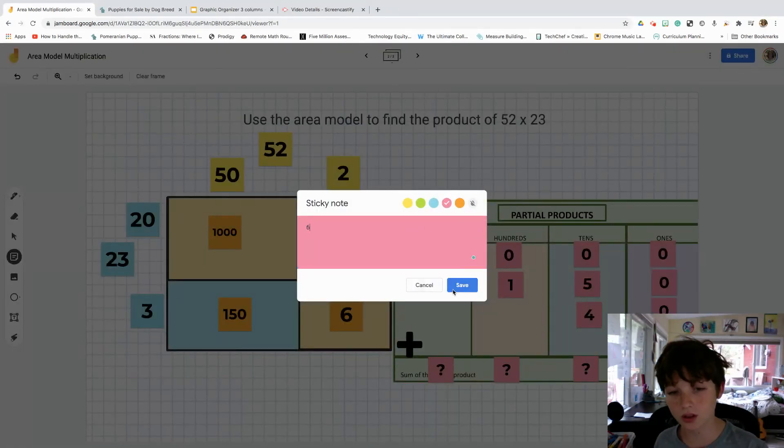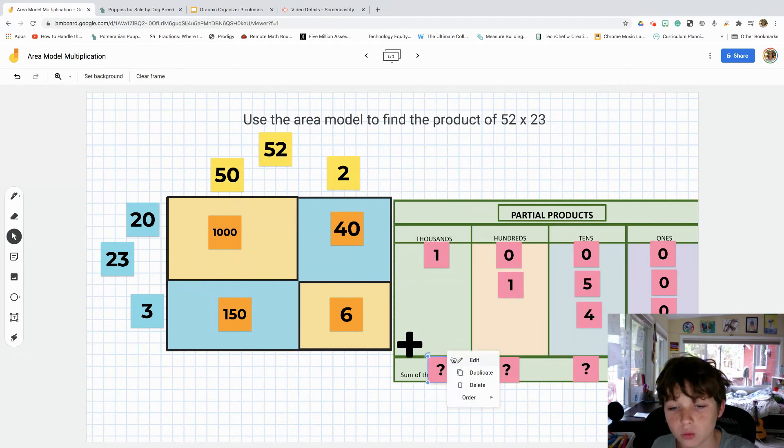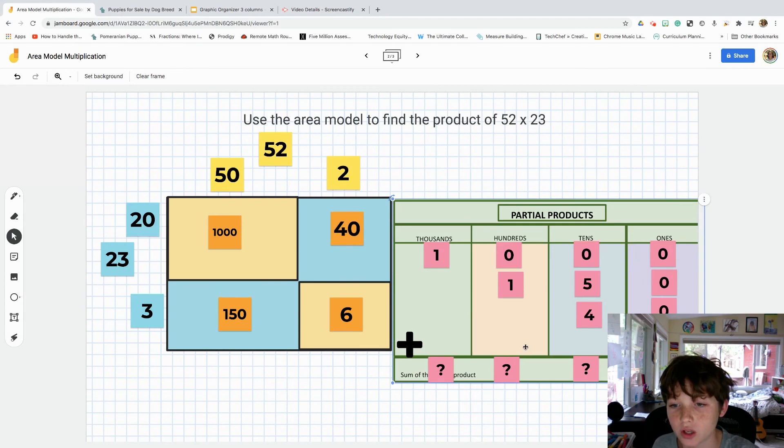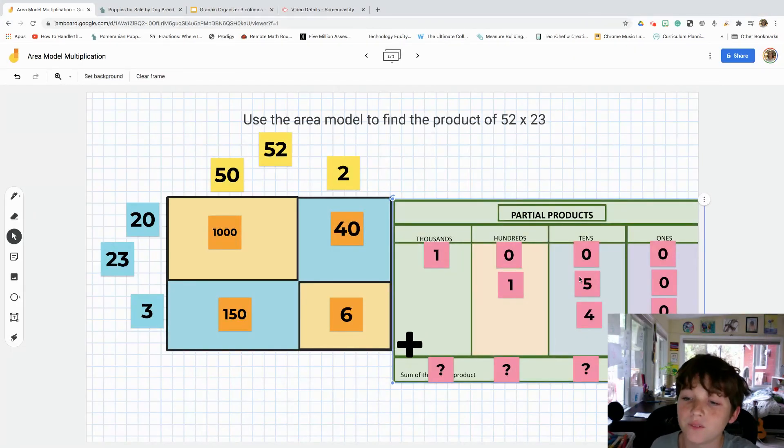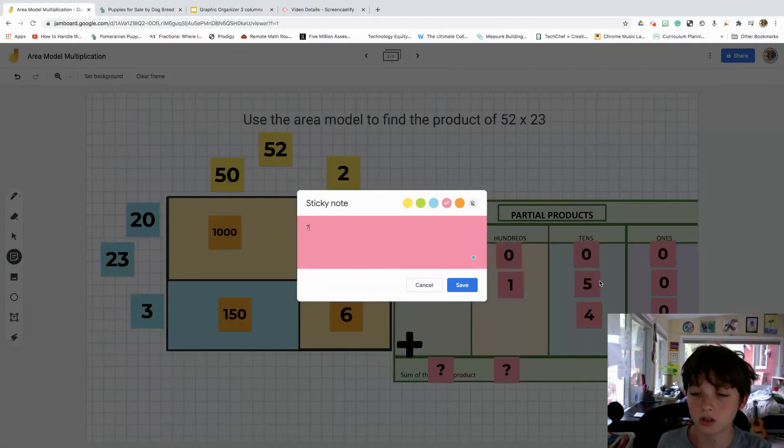Now that we've written down all of our partial products, we shall add them together. One, well, 1,000 plus 100, 1,100. And then 5 plus 4 equals 9. So, 90. Because you just add the zero from them. And yeah, basically 90.